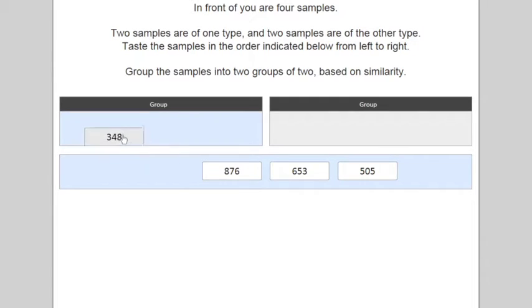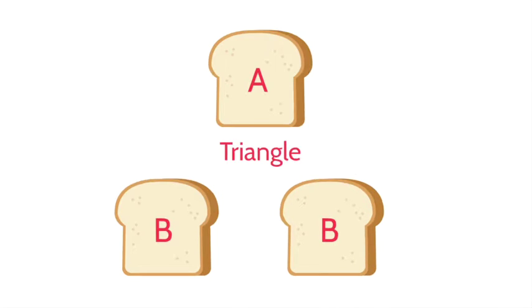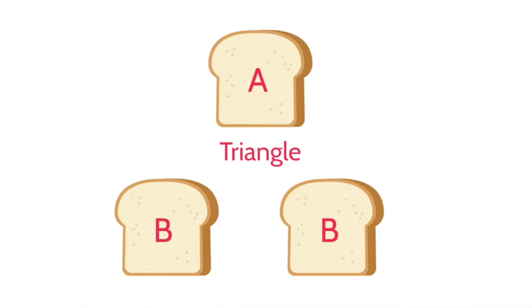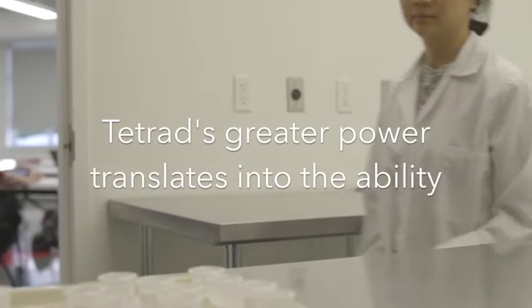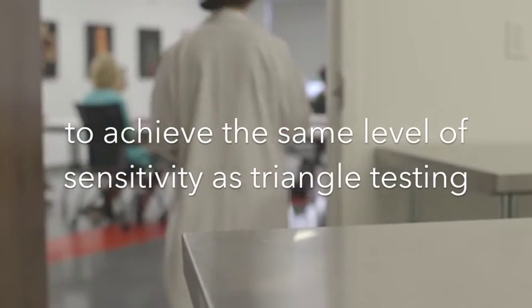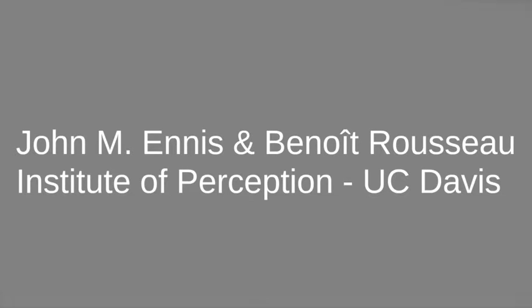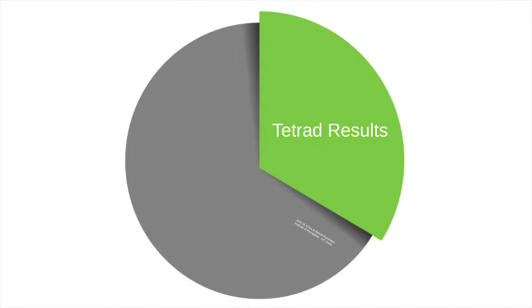Tetrad testing has been gaining popularity and has been adopted over the last few years as an alternative to other discrimination methods, especially triangle. Even though Tetrad testing uses four samples instead of three like triangle testing, research demonstrates that Tetrad's greater power translates into the ability to achieve the same level of sensitivity compared to triangle testing while collecting fewer results. In fact, research by Ennis and Rousseau suggests that Tetrad requires only one-third of the results needed by triangle to achieve the same level of sensitivity.